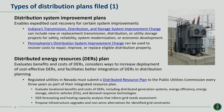The first type is a system improvement plan that enables expedited cost recovery for some types of specified investments — this is typically a legislative requirement. For example, in Indiana, utilities can file system improvement plans for newer replacement transmission, distribution, and energy storage, for reasons including safety, reliability, modernization of the grid, and economic development. In Pennsylvania, utilities can submit long-term infrastructure plans to repair, improve, or replace eligible distribution equipment. There are lots of states that have something like this.